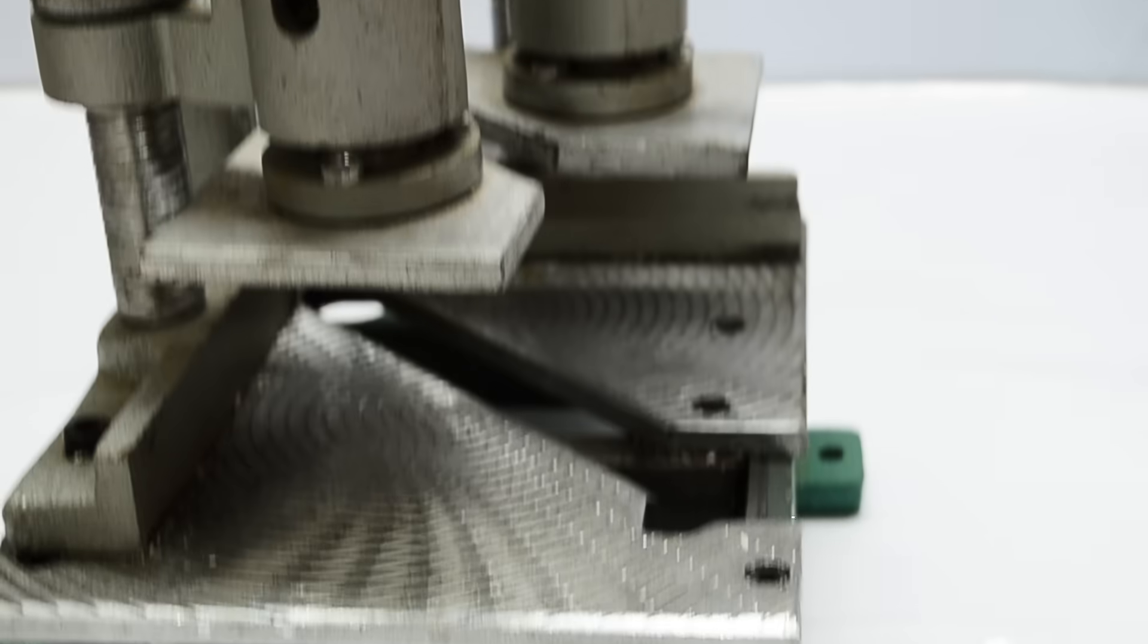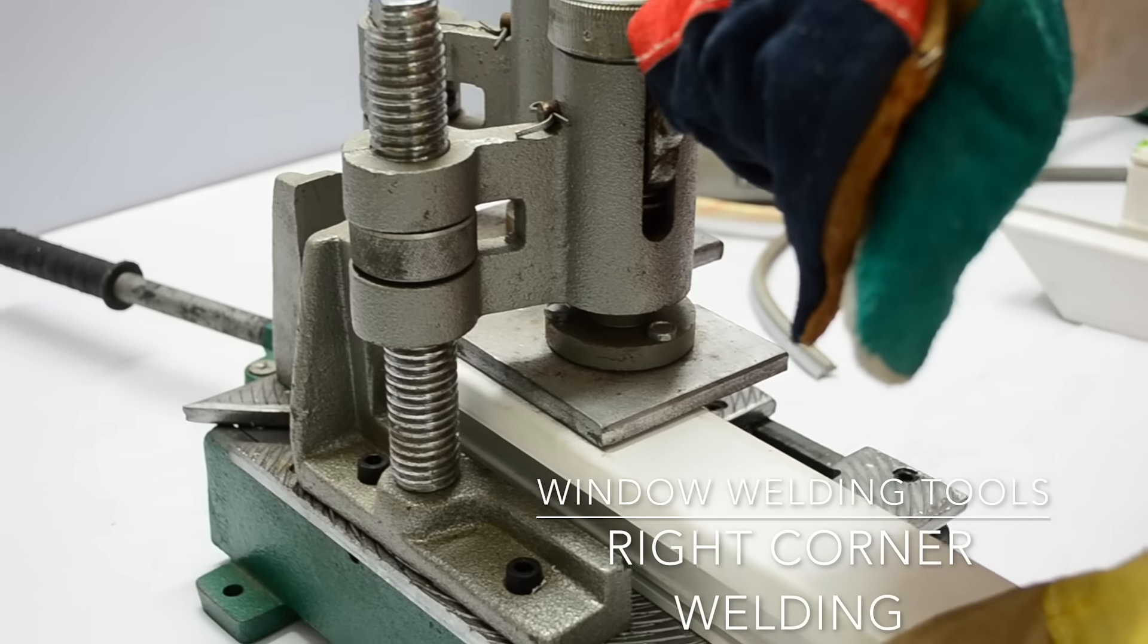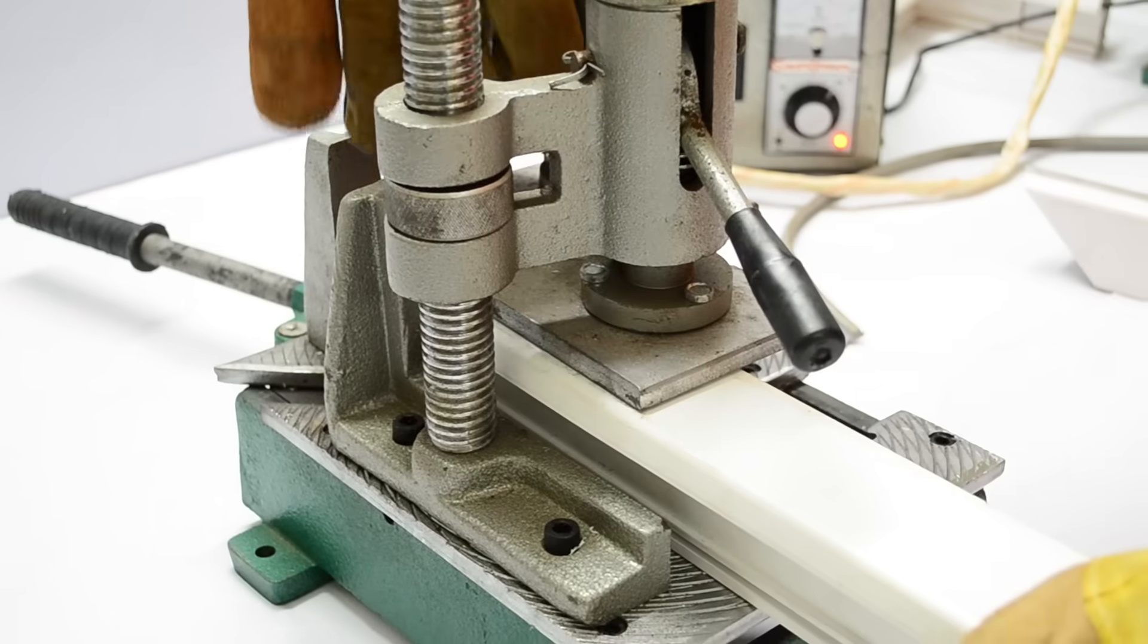Step 1 of the welding process: Right corner welding tool. Position the first UPVC profile in place and press the lever down to lock it.